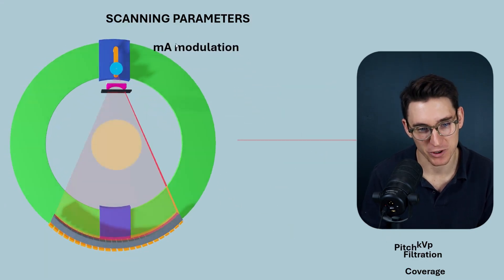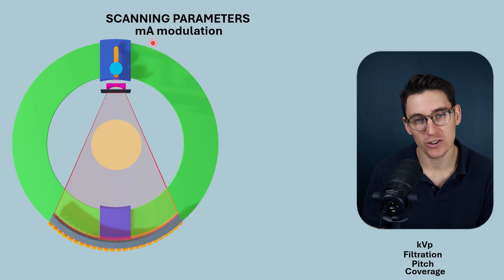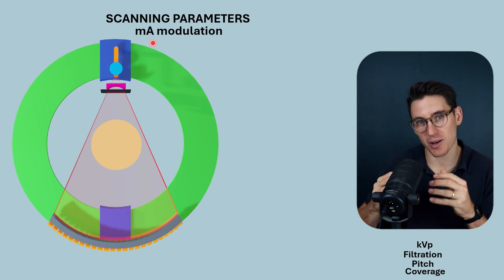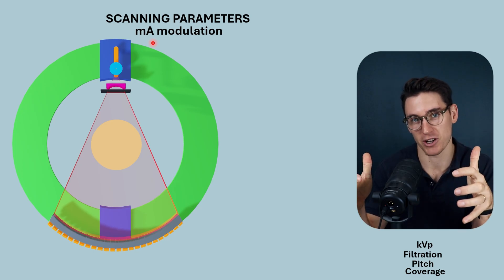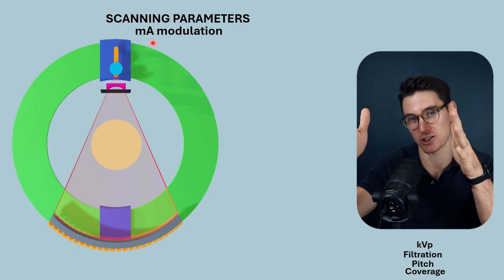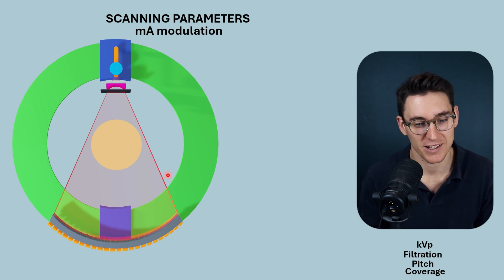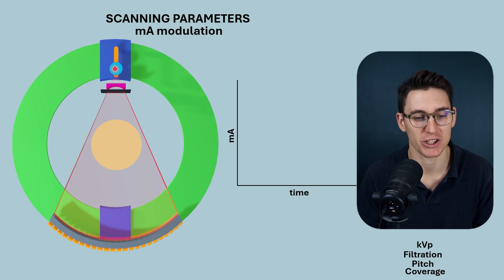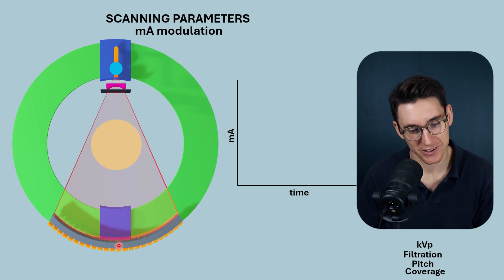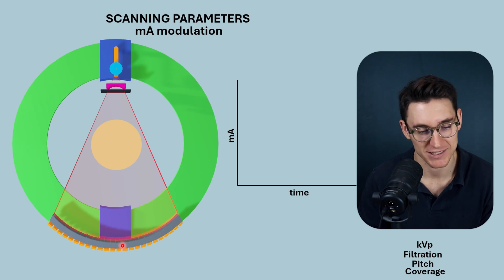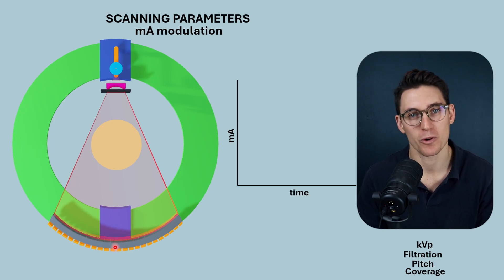The next factor is current modulation — milliampere modulation. If we modulate the current passing through the tungsten filament within the cathode, we change the number of electrons available at the surface of the filament through thermionic emission, and ultimately change the number of electrons accelerated towards the anode, which in turn determines the number of x-ray photons heading out towards the patient. If we plot a graph of current on the y-axis and time on the x-axis whilst the CT machine rotates around our patient, a sensor by the detectors could sense how many x-ray photons are being received.